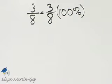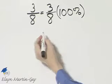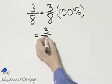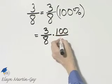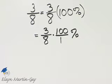Multiplying a fraction by 1, of course, does not change its meaning or its value, and I'm multiplying by 1 again in the form of 100%. So this is 3 over 8 times, I'll write the 100 as 100 over 1, and this is our percent. We just need to simplify.